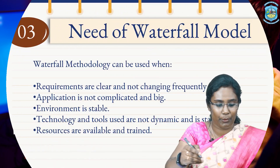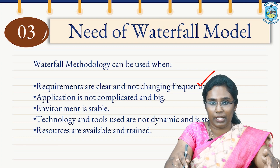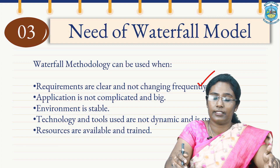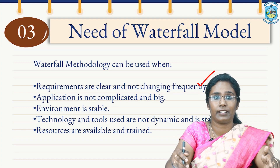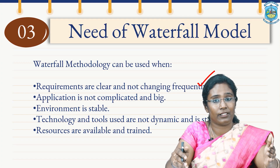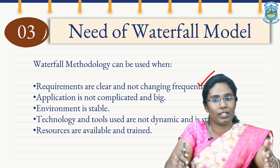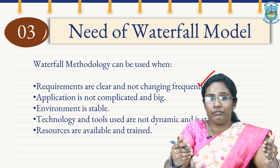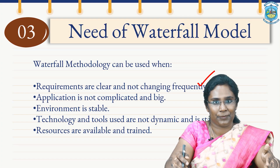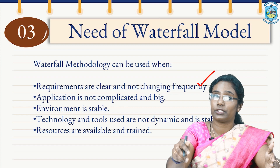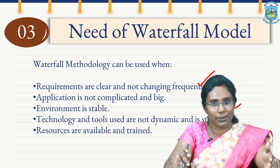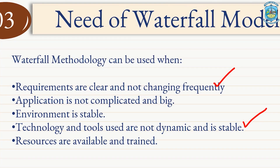Now let us see the need of the waterfall model. First, the requirements are clear and not changing frequently — whenever requirements are fixed by the client, we can opt for the waterfall model. Second, the application is complicated and big — in that case also we opt for waterfall model. Third, the environment is stable, meaning the environment details are fixed by the client at the very first stage. Fourth, the technology and tools used are not dynamic and are stable — the technological requirements and tools are fixed after collecting requirements. Lastly, the resources are available and well trained. In these cases, we prefer waterfall model.